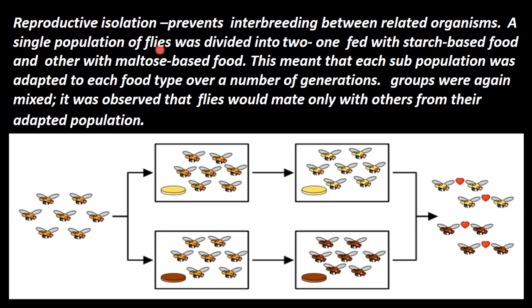In one experiment, a single population of flies was divided into two groups. One group was fed with starch-based food and the other with maltose-based food. This is the same population of flies. Over a number of generations, each sub-population was adapted to each food type.